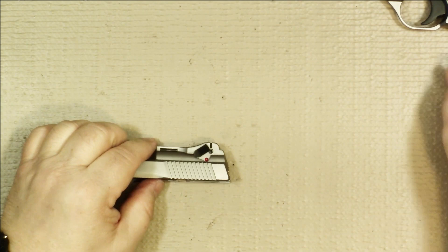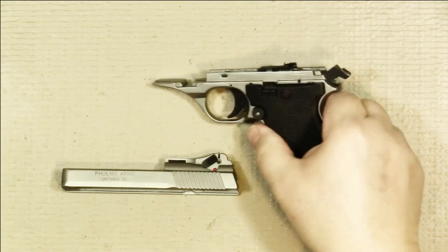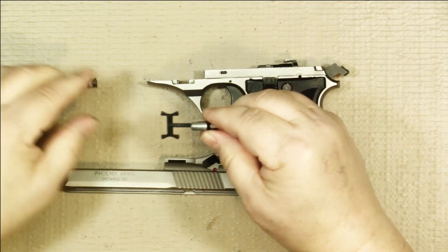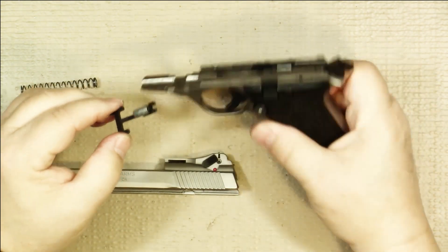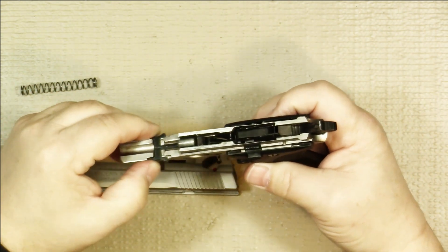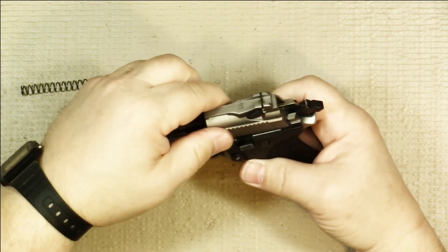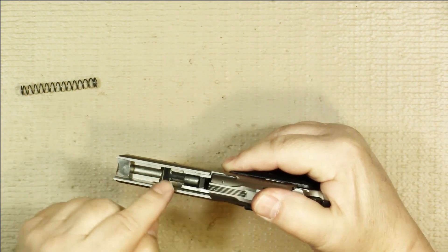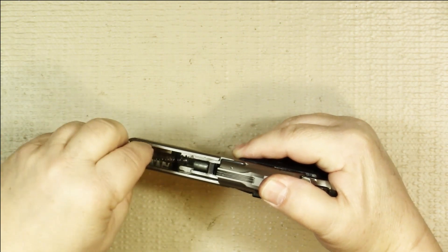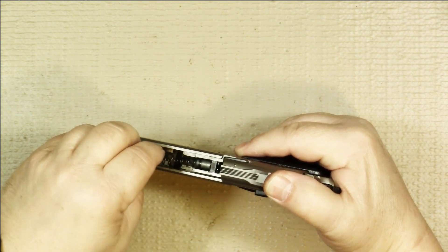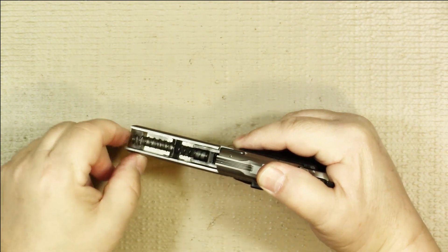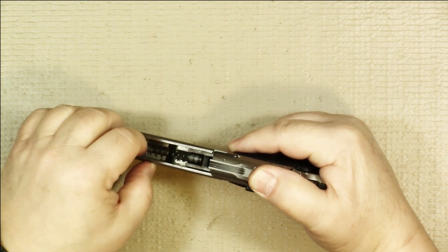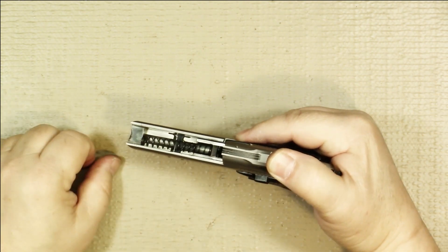So now you can reassemble everything. So the first step, you put the lock piece in. Then put your slide on. Once the lock piece is in and the slide's in, then you can put your spring in. So you put it over the lock piece, the post on it. And then push down on the front so it's down in its recess, just like that.